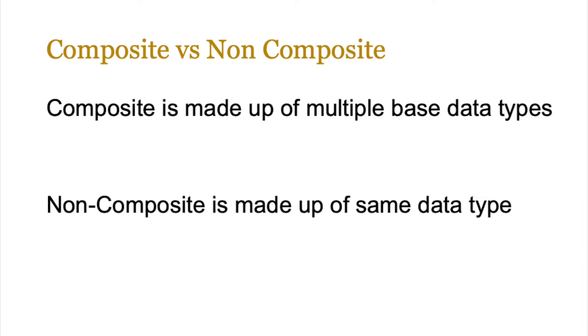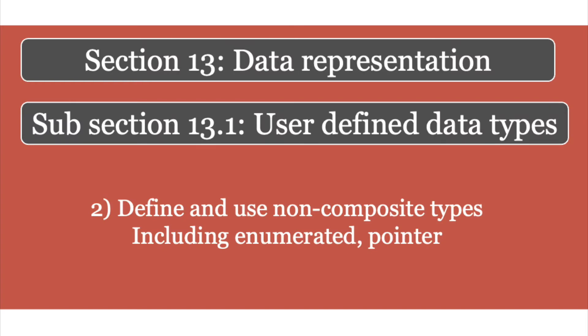A non-composite data type, on the other hand, is made up of the same data type that is simply like an array where you can have all of the values of the same data type. So it's not a compound. And as such, it's a non-composite type.